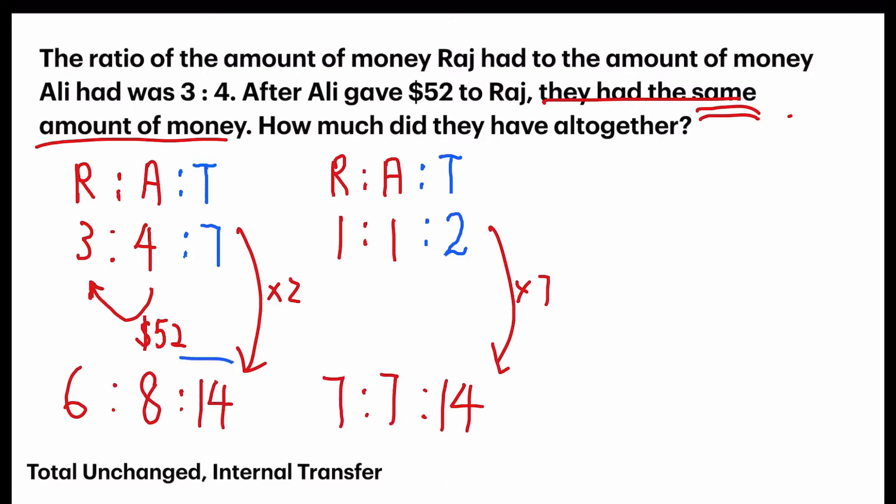Now, with our new ratio, let's observe what has happened. If you look under Raj, before that, he had 6 units. But after, he had 7. What happened? Because, in the story, remember, Ali gave $52 to Raj. So, you will see, under Ali, he had 8 units before, but 7 after. Because, he transferred that 1 unit to his friend Raj. So, we can tell that 1 unit difference is equal to $52.